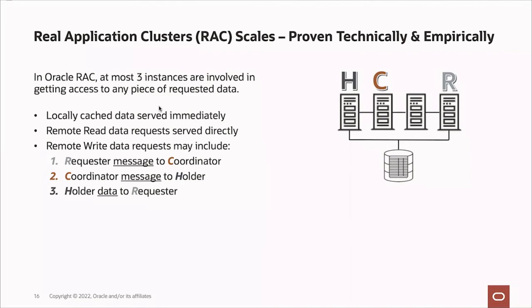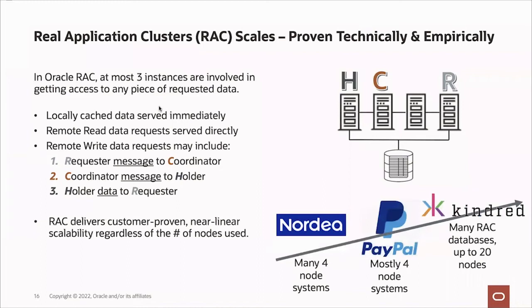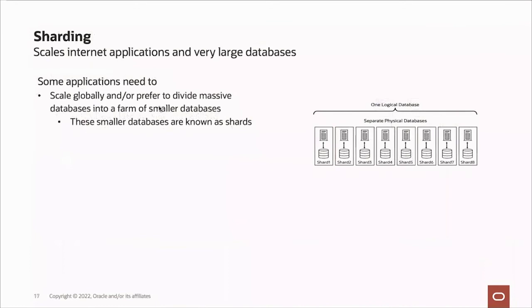No matter how many nodes you have in your cluster, there is no need to touch more than three instances. That is why RAC delivers customer-proven, near-linear scalability regardless of the number of nodes used. We have multiple customers with at least four-node deployments — including Nodea, PayPal, and Kindred. Kindred has RAC databases up to 20 nodes. They use RAC because it enables them to scale out very smoothly without having to change the application, delivering near-linear scalability across all workloads for decades.